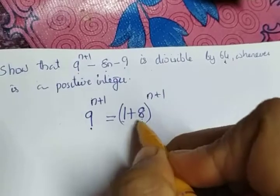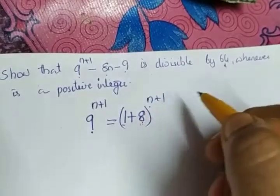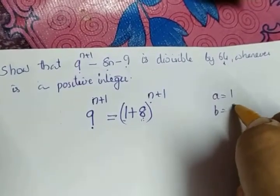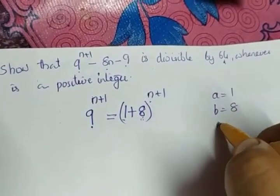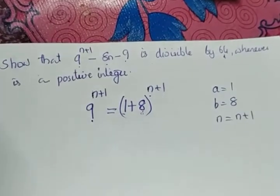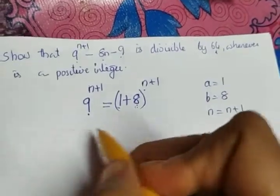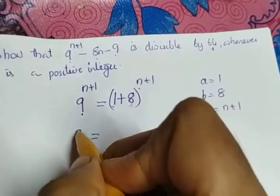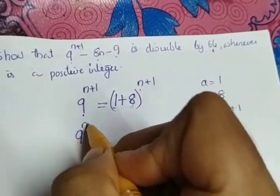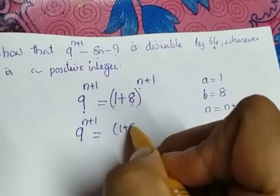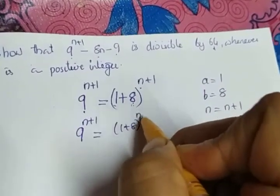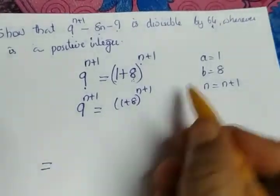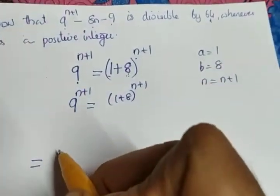Now it is of the form (a+b) raised to n+1, where a = 1 and b = 8. So if I apply the Binomial Theorem, 9 raised to n+1 equals (1+8) raised to n+1, which equals 1 raised to n+1 plus ...